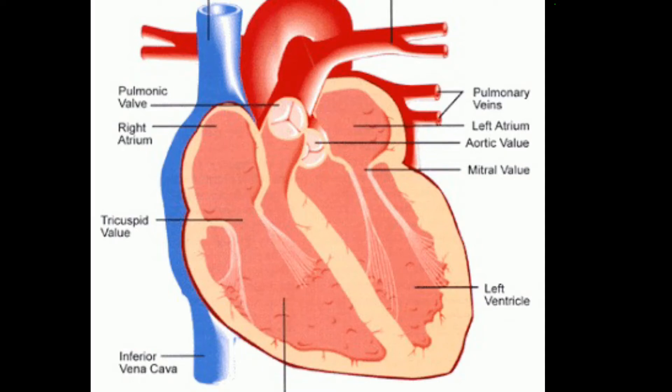The heart is an organ that pumps blood throughout the body via the circulatory system, supplying oxygen and nutrients to the tissues and removing carbon dioxide and other wastes from them.